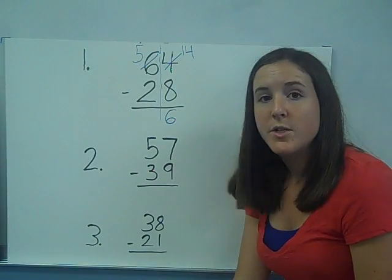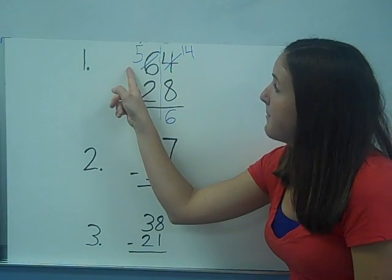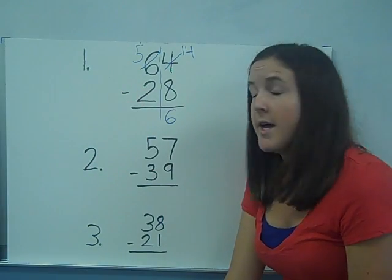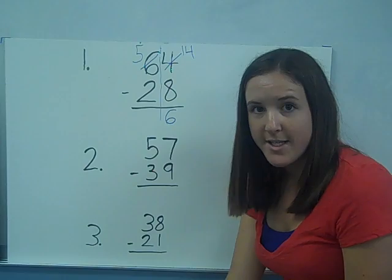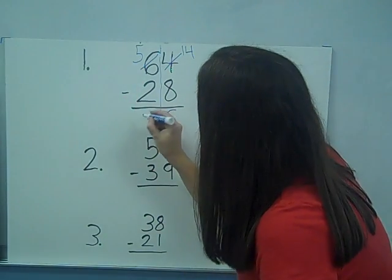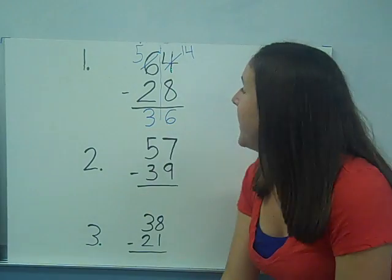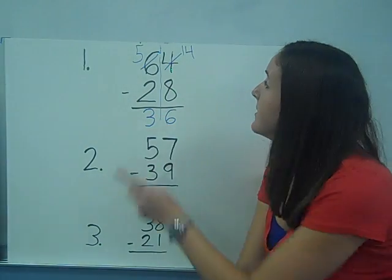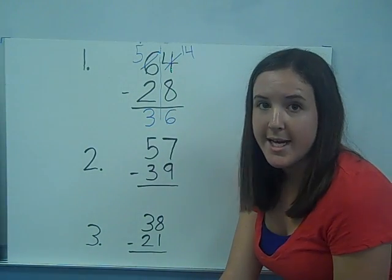Alright, now I'm going to look at my tens. Top number is five, bottom number is two. The top number is bigger, so I can go figure. Five minus two is three, so I write the three. I now have my answer of thirty-six. Sixty-four minus twenty-eight is thirty-six.